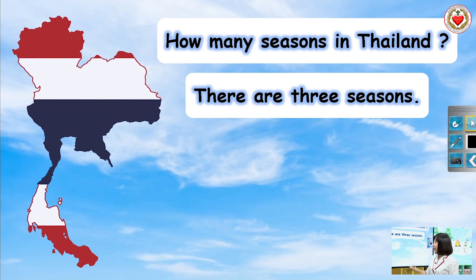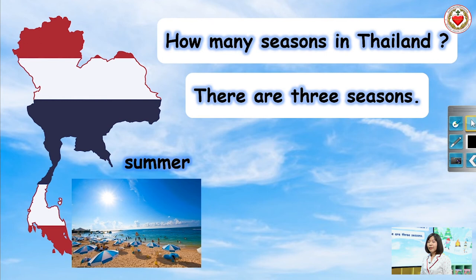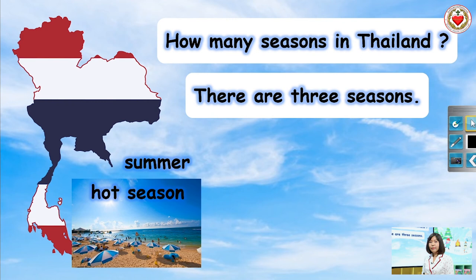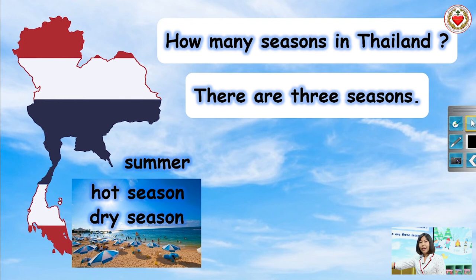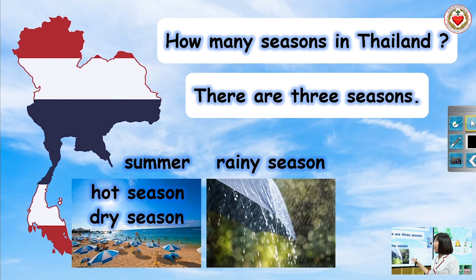Let's see the seasons in Thailand. Summer — repeat after me. Summer. Summer ก็คือฤดูร้อนนะคะ นอกจากคำว่า Summer แล้ว ฤดูร้อนยังมีคำอื่นที่หมายถึงฤดูร้อนได้เหมือนกันนะคะ เช่น The hot season และ Dry season. Let's repeat: Summer. Hot season. Dry season. Well done.